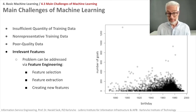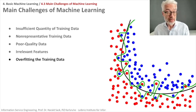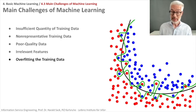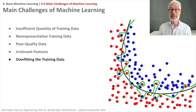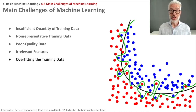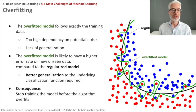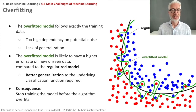Even if your data is nice and representative, one problem you can run into with adaptive learning algorithms is overfitting — being too well adapted to exactly the training sample you have chosen. If you do this, you lose the ability to generalize, and the algorithm may perform badly on previously unseen data. The overfitted model follows exactly the training data, shown as the green line in the graphic.